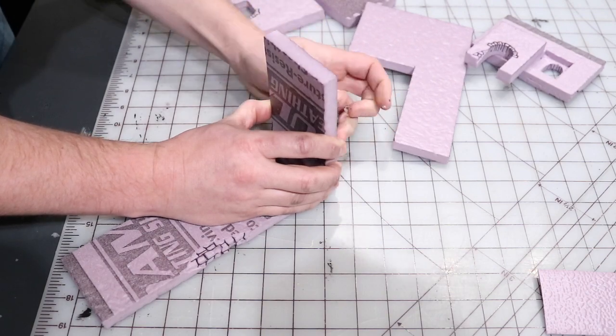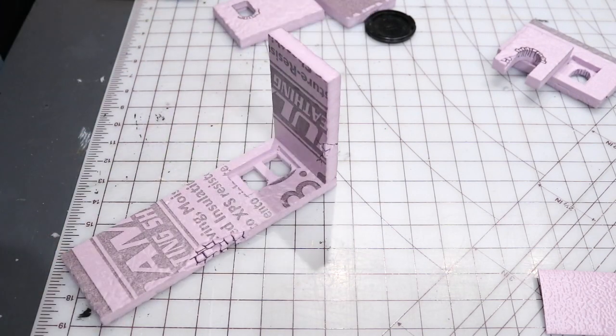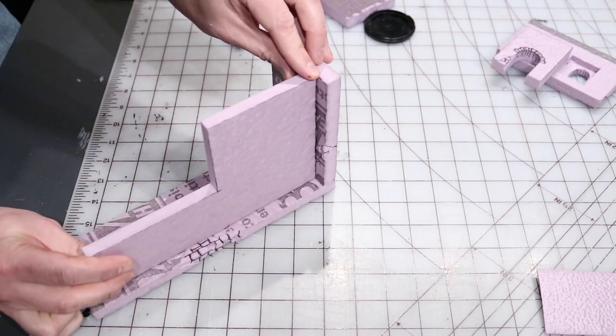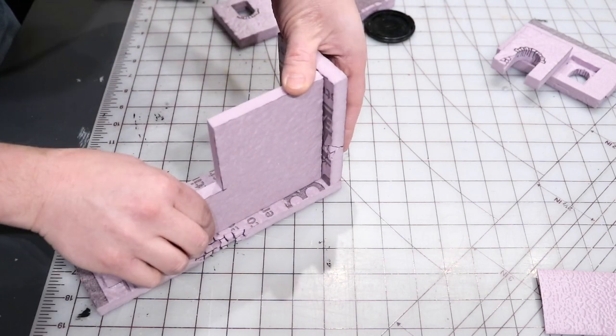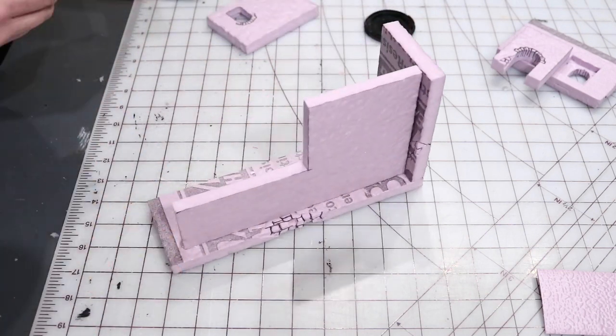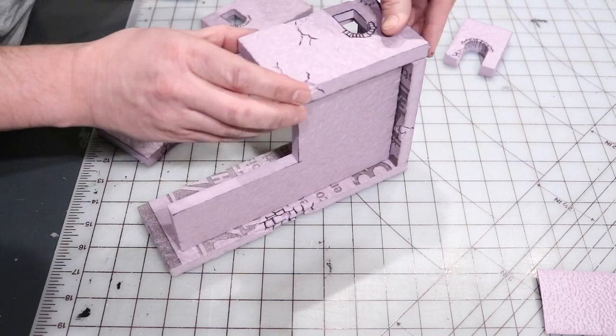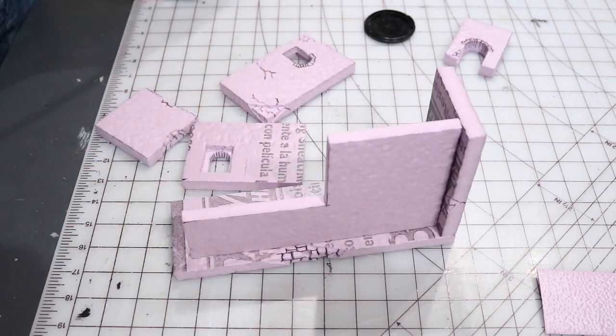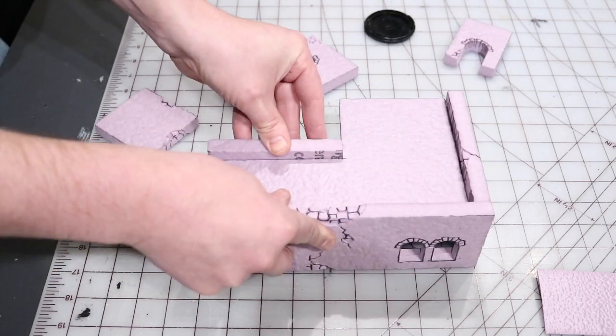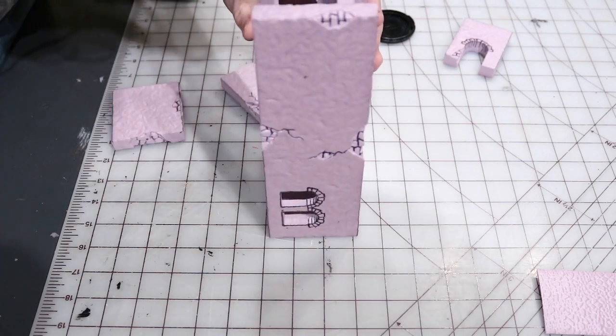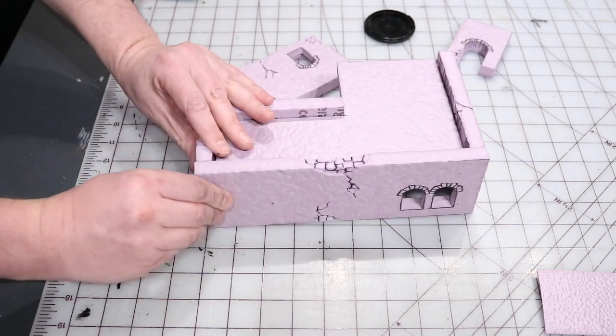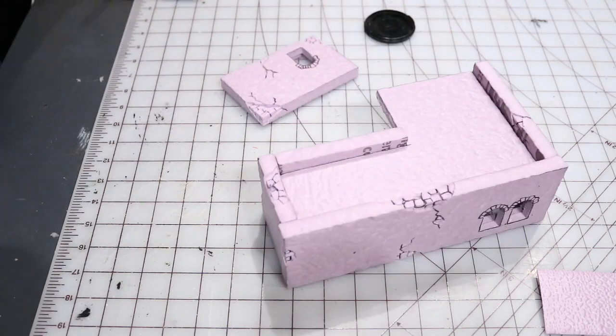I'm hot gluing all of the components together. Started with one corner and then hot glued the roof into place and then started working my way around the rest of the piece, making sure that I didn't glue something into place which would require me to glue kind of an interior section. So I'm kind of gluing it where it made logical sense to stack it without gluing myself into a corner.